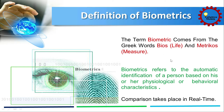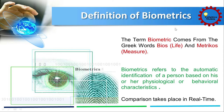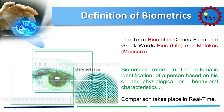Basically, biometrics depends on a person's physiological or behavioral characteristics. Comparison always takes place in real-time. That means a person who uses the biometric system at that time must be present physically or their behavioral characteristic must be captured. Biometrics refers to the automatic identification of a person based on his or her physiological or behavioral characteristic.